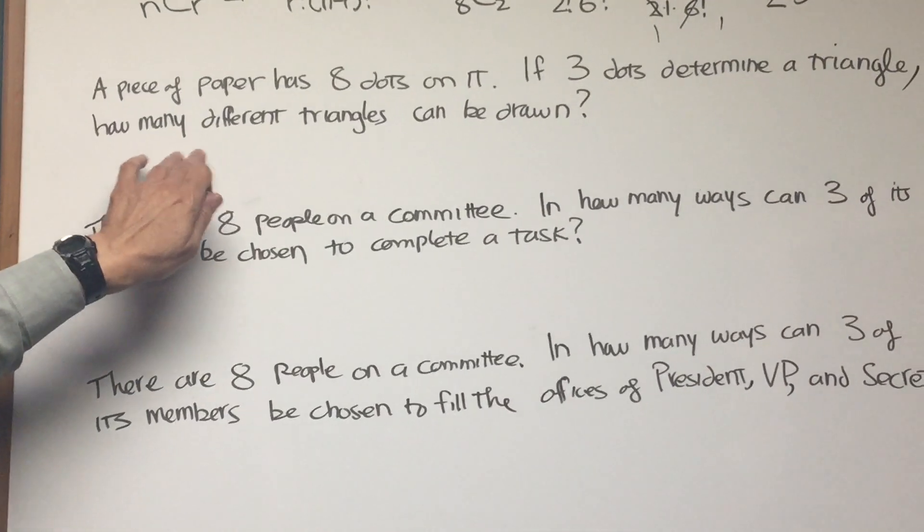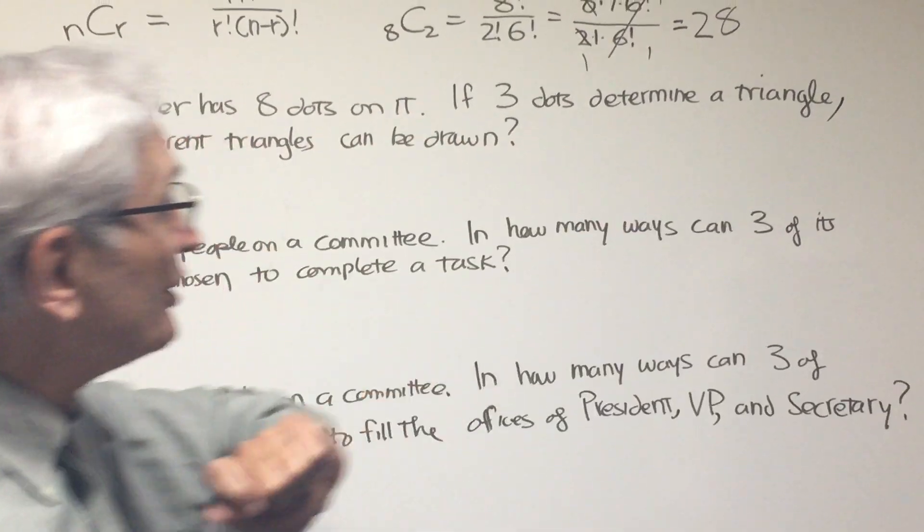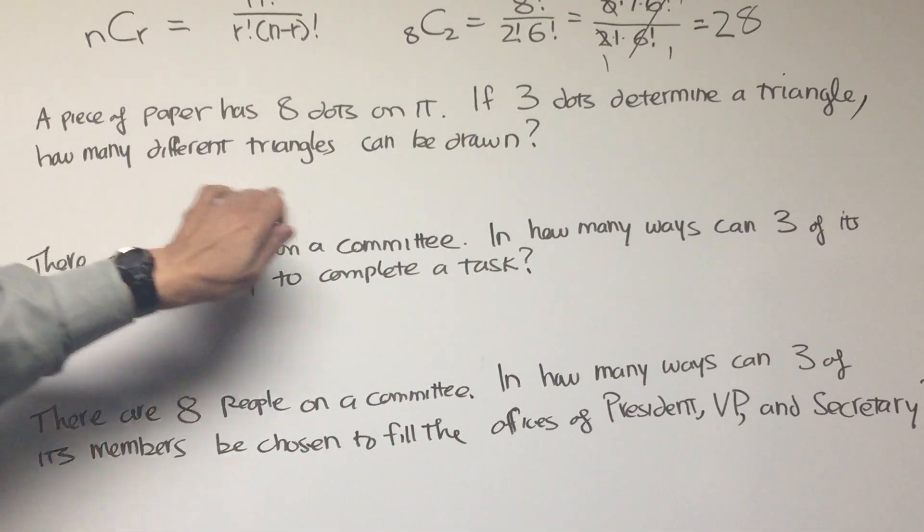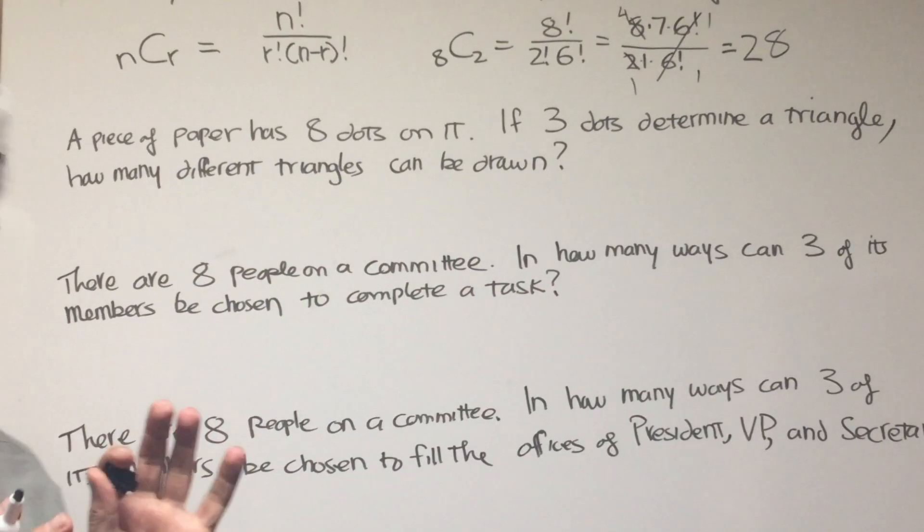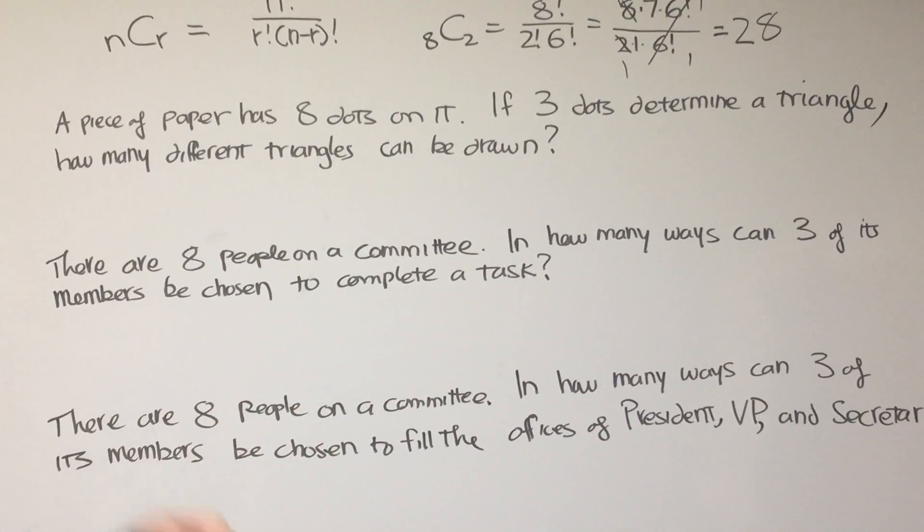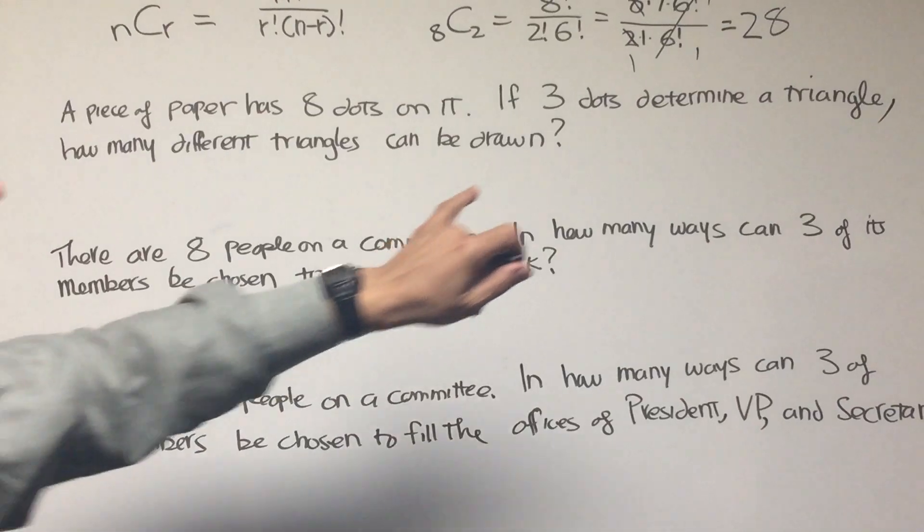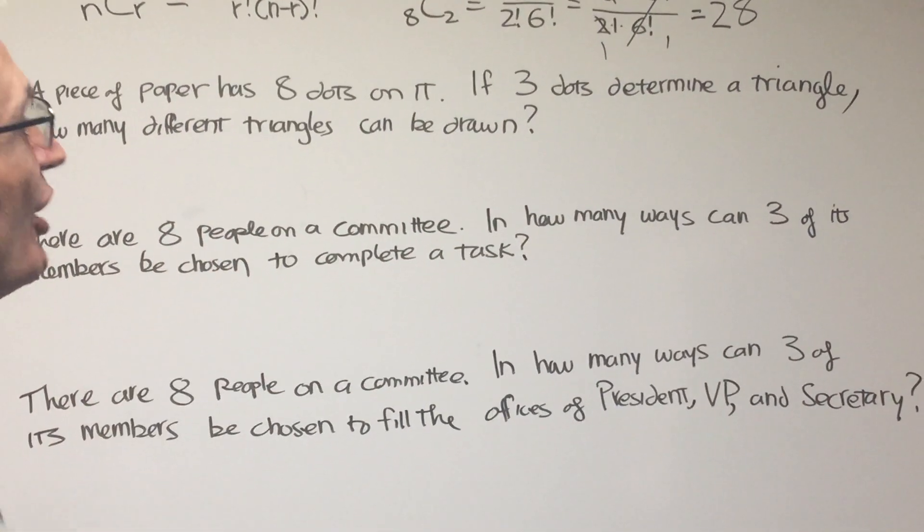Okay, now let's look at the next one. A piece of paper has eight dots on it. Same thing. Three dots determine a triangle. So how many different triangles can be drawn? And let's assume that no three of these dots are collinear. That is, they lie along the same line. Then we really don't have a triangle, and that complicates the problem. So we should say that no three dots are collinear.